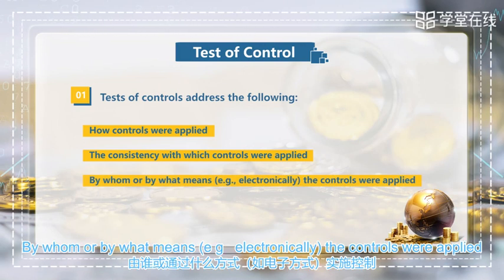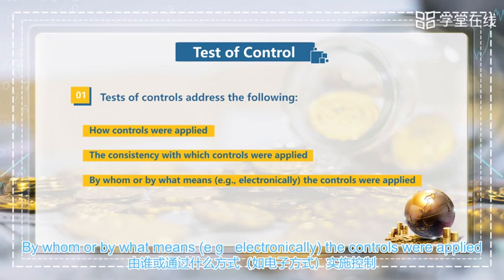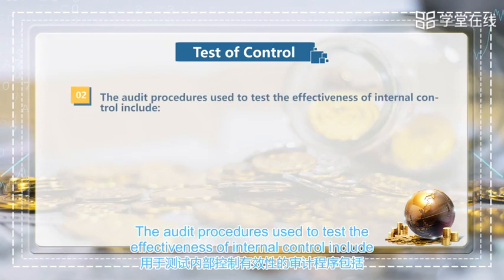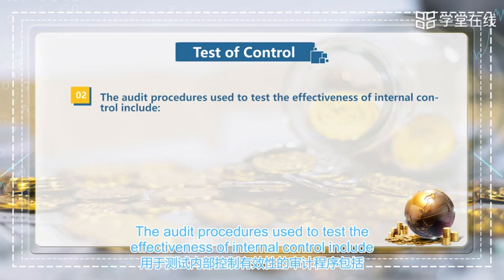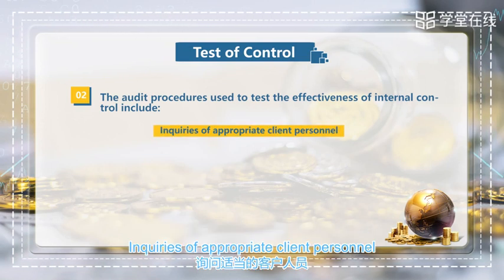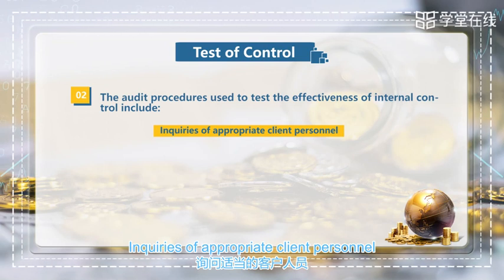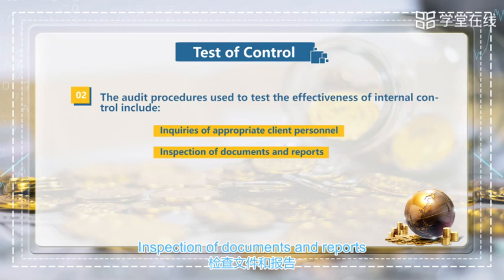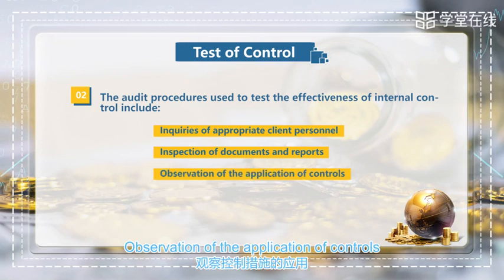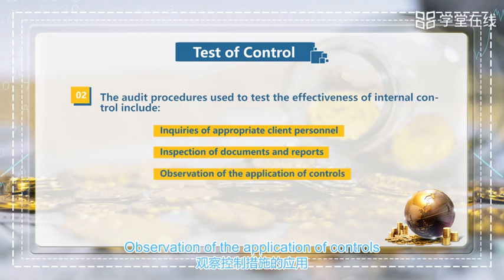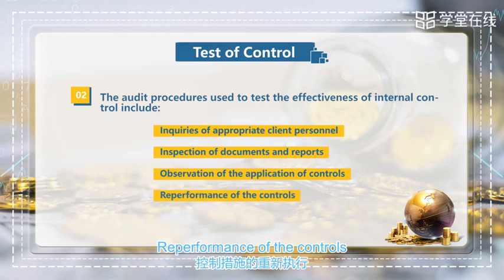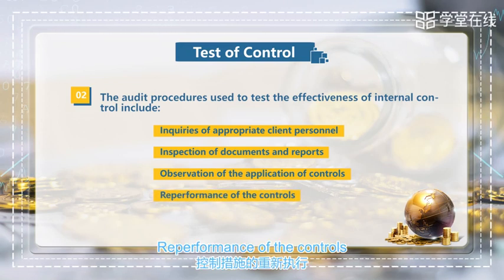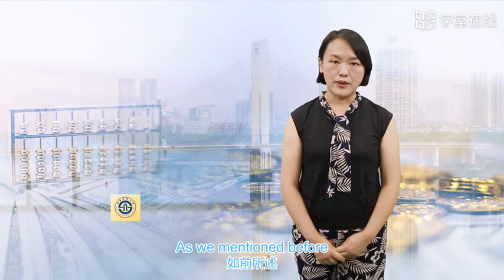And by who or by what means the controls were applied. The audit procedures used to test the effectiveness of internal control include inquiry of appropriate client personnel, inspection of documents and reports, observation of the application of controls, and re-performance of the controls.